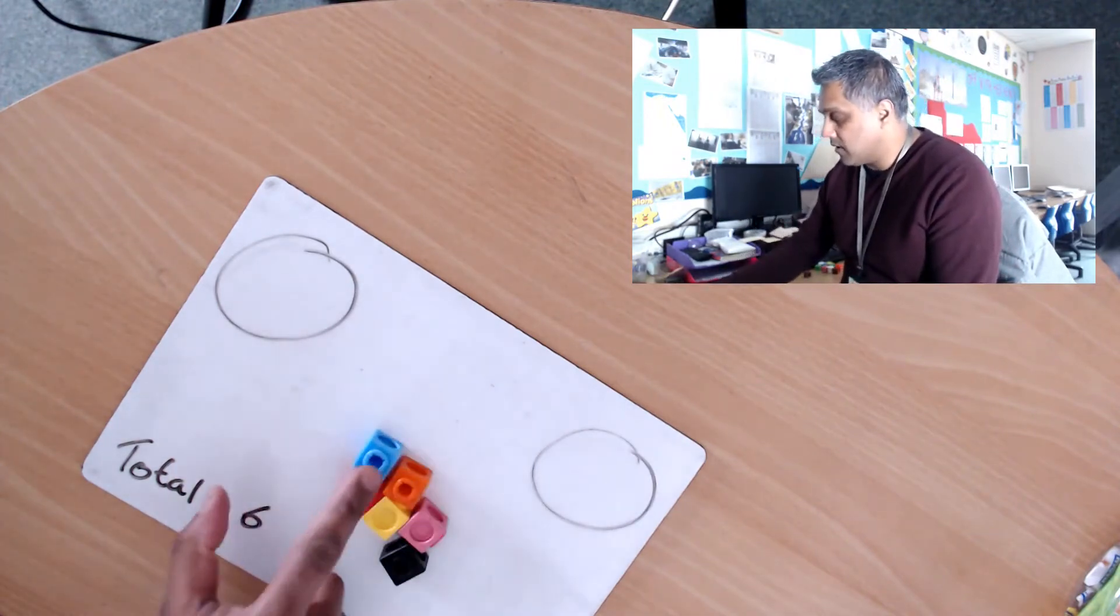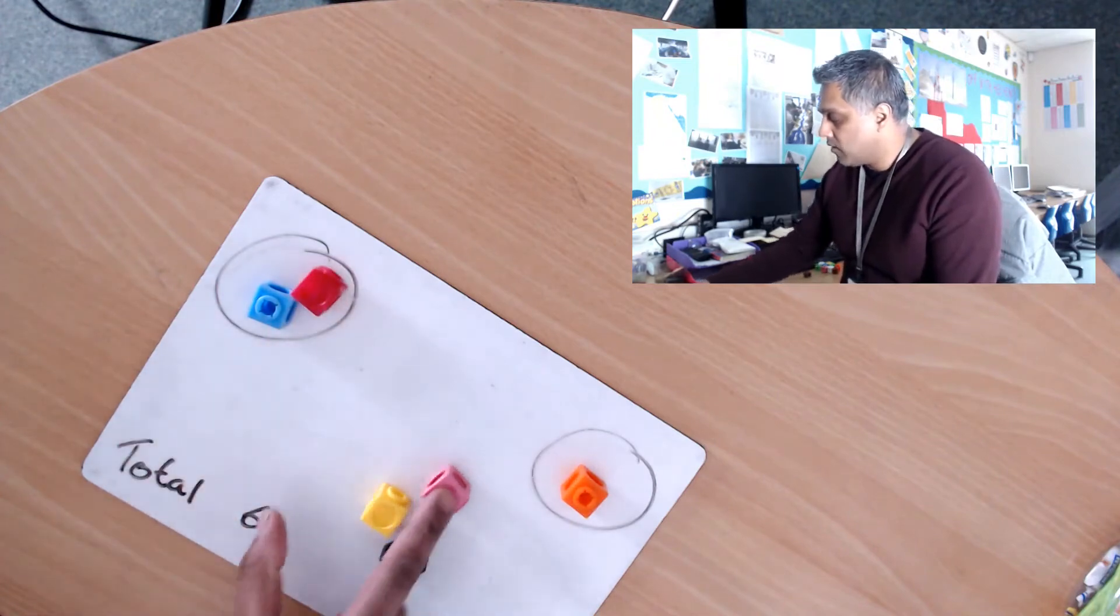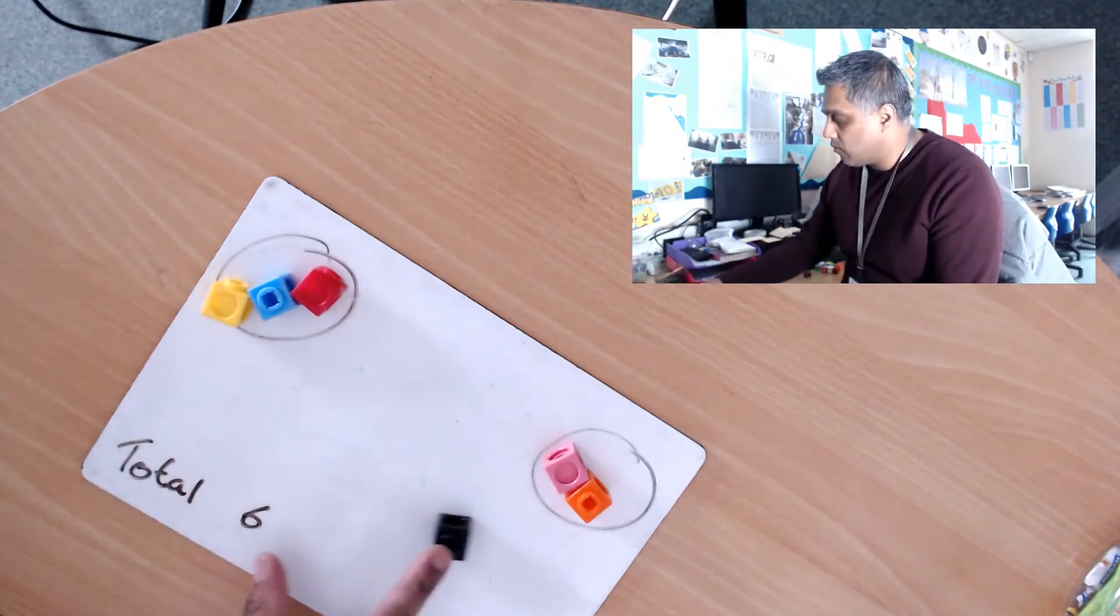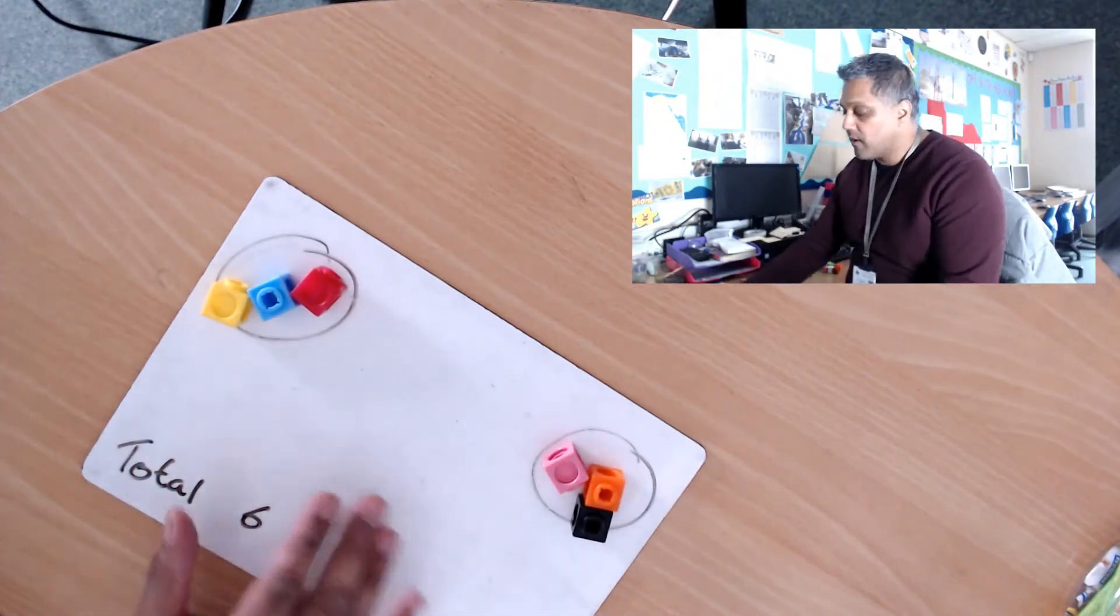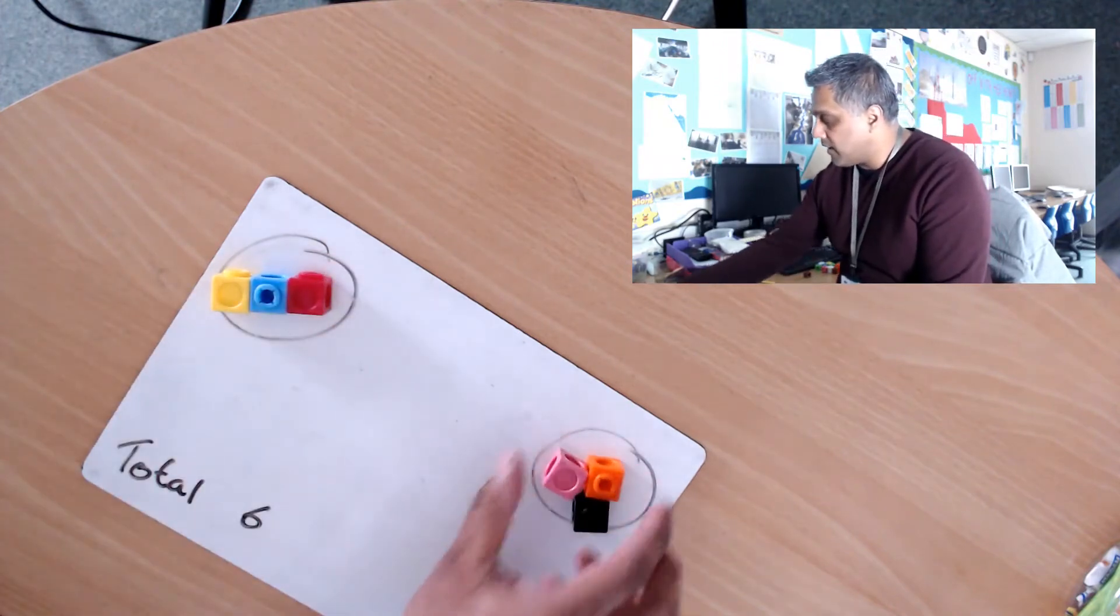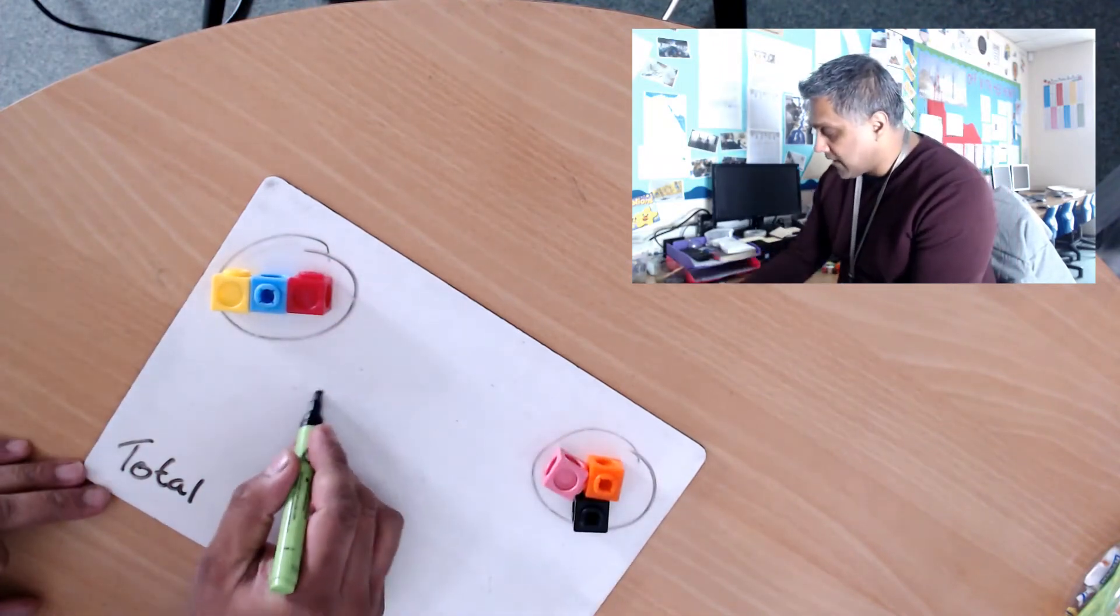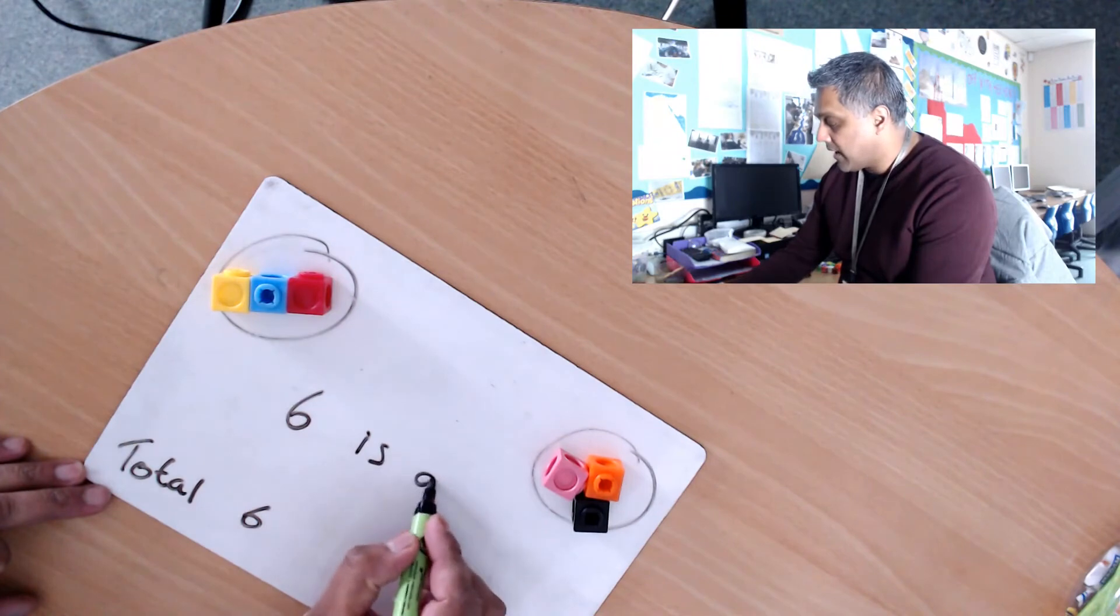So one for me, one for you, one for me, one for you, one for me, one for you. Nothing left over. I got three in this group, I got three in that group. So yes, six is an even number because I can share it equally between my two groups.